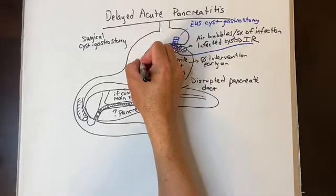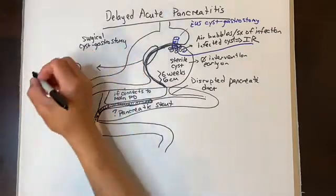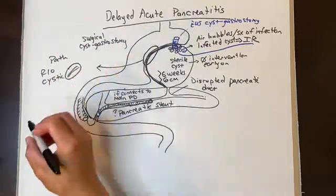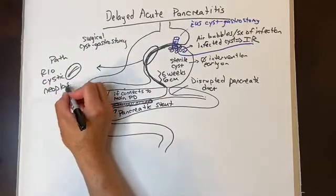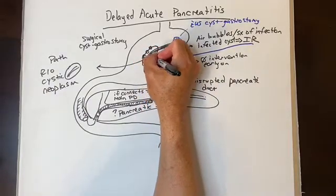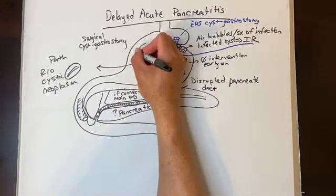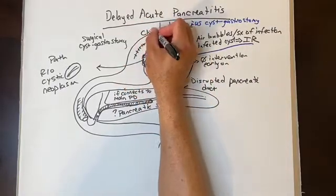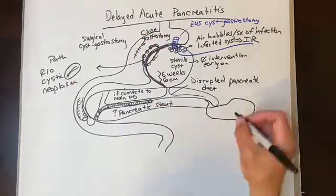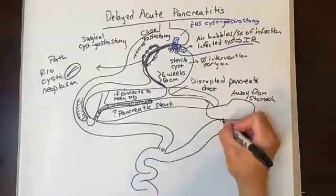The surgical approach is open or laparoscopic cystgastrostomy. Key steps: open the anterior stomach, aspirate with an 18-gauge needle and syringe to confirm the cyst, then make a generous ~5 centimeter oval-shaped connection between the stomach and the cyst with removal of a portion of the cyst wall — send this to pathology to rule out cystic neoplasm. Run a suture around the edges to prevent bleeding and maintain connection, then close the gastrotomy. If the cyst is not connected to the stomach or needs more dependent drainage, a Roux-en-Y cystjejunostomy is another option.